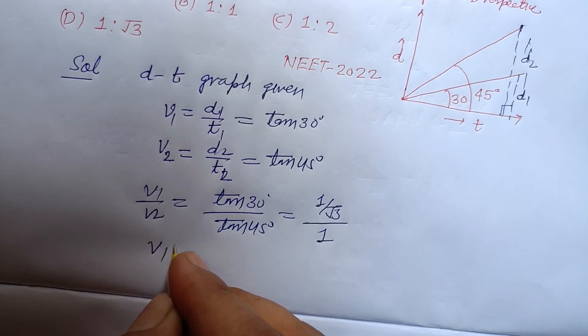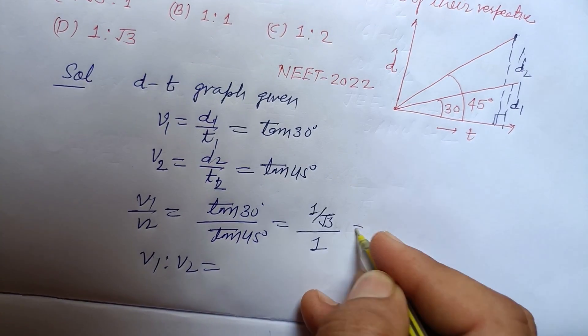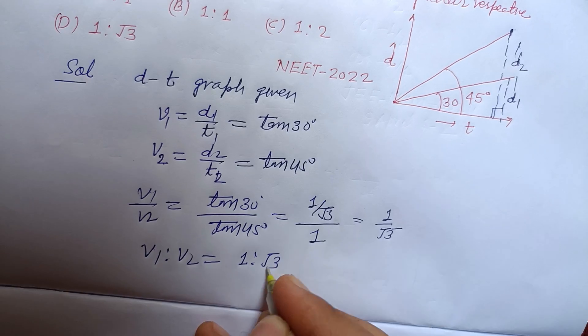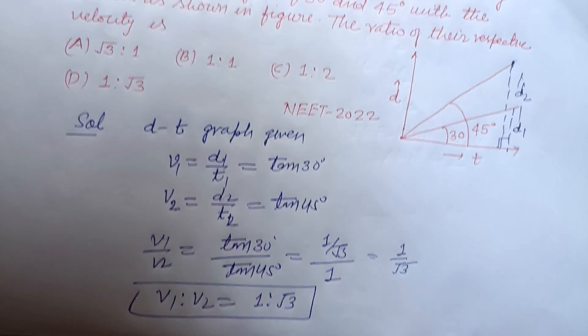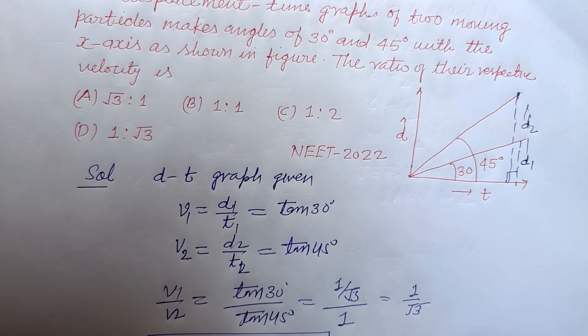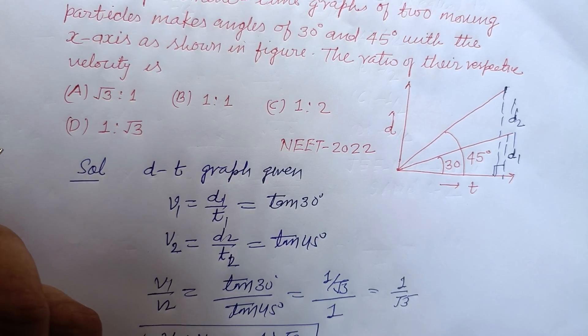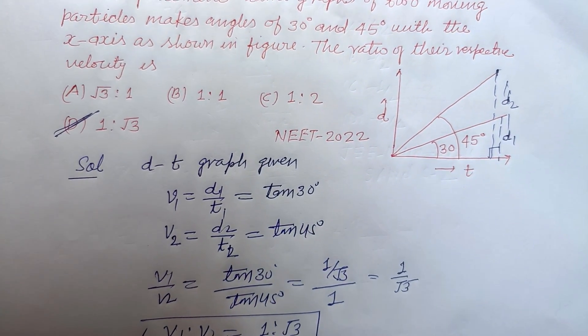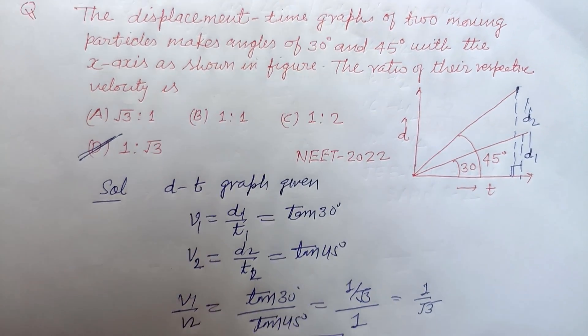Therefore v1 upon v2, and this is 1 upon root 3, so 1 colon root 3 is the correct answer of this question, which is found in option D. Option D is correct. I hope you got it. Please like the video, subscribe the channel, thanks for watching.